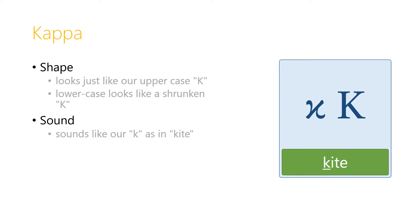Kappa — the uppercase looks just like our letter K, and the lowercase looks like a curvy, shrunken version of our capital K. The sound is kuh, just like K as in kite.